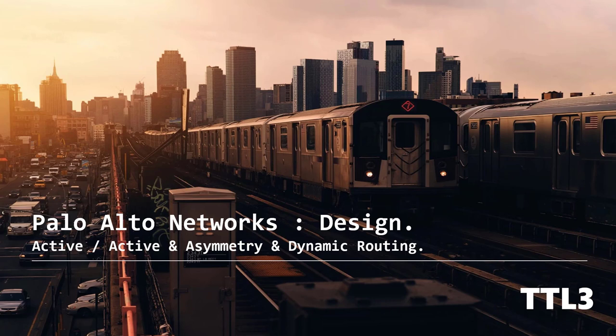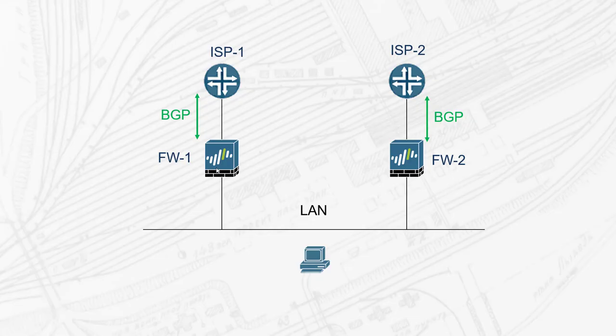This is a topic a lot of people try to avoid, but it provides great flexibility when it comes to dynamic routing and traffic asymmetry. We will use this diagram for the example, where my two standalone firewalls — firewall 1 and firewall 2 — route traffic using BGP with two different ISPs, ISP1 and ISP2.